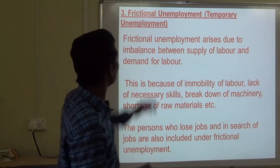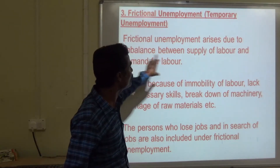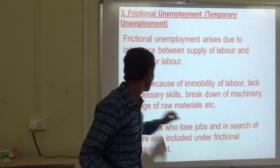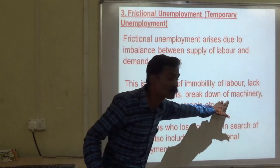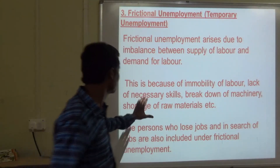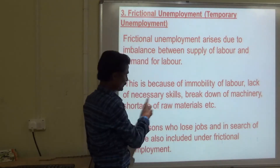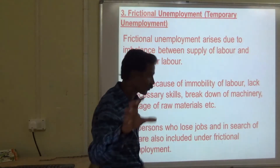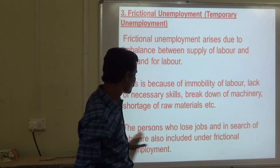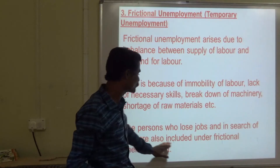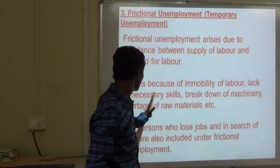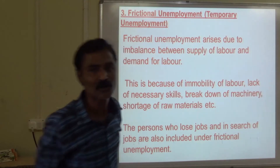Next, frictional unemployment or temporary unemployment. This arises due to imbalance between supply of labor and demand for labor — because of immobility of labor, lack of necessary skills, breakdown of machinery, or shortage of raw materials for production. Persons who have lost their jobs and are in search of new jobs are also included under frictional unemployment. Key causes: lack of necessary skills, breakdown of machinery, and shortage of raw materials.